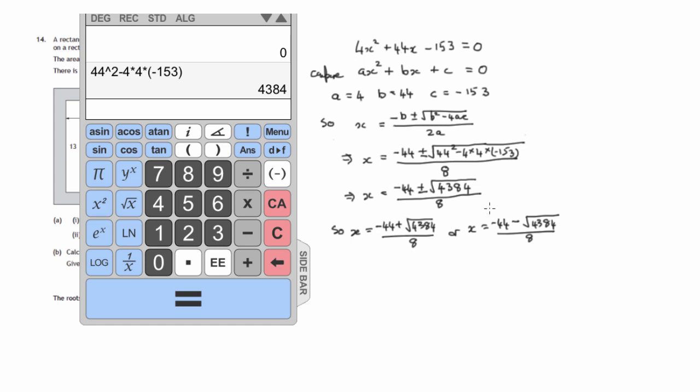Now, looking at the second one in particular, negative 44 minus another positive number, negative 44 minus some other big number, is going to be negative. And if we divide a negative number by 8, we're going to get a negative number.